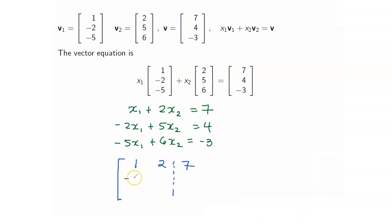Take note that the columns that we obtain here, look at this: 1, negative 2, negative 5 is exactly your V1. 2, 5, 6 is your V2. And the column of constants here is your vector V, the vector that you are testing.